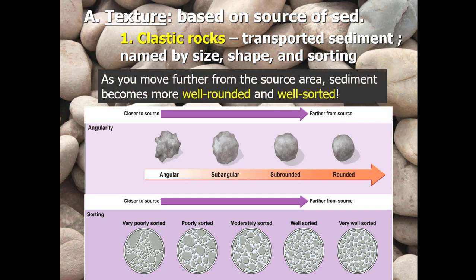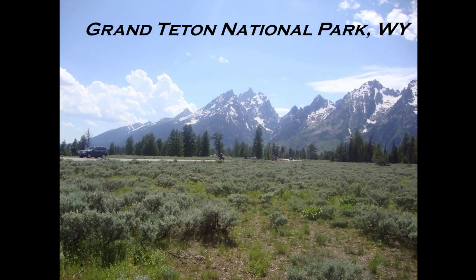In general, as you move further away from the source area — which is mountains — the sediment will become more well-rounded and more well-sorted. A lot of the minerals that are unstable at the surface of the earth will also become more stable as they're transported away, because they begin to chemically weather into minerals that are stable. A good way to see how these particles change is to start at a source area and move away from it.